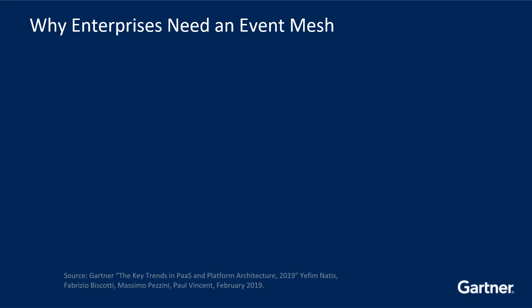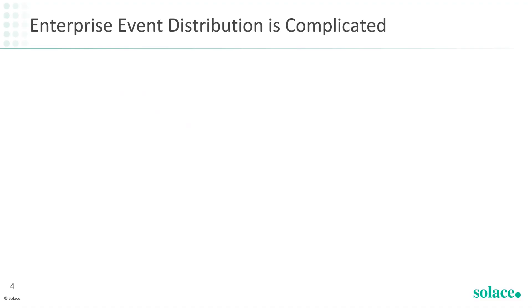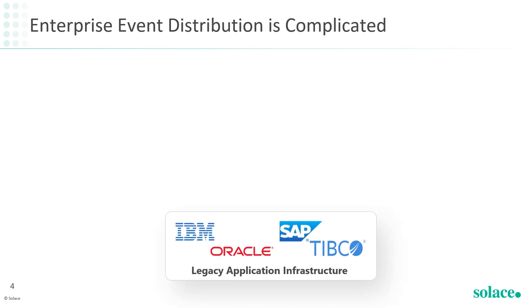Now let's talk about why the concept of an event mesh is important. According to Gartner, event-driven computing is central to the continuous agility of digital businesses. Event mesh provides optimization and governance for distributed event interactions. Here's what we're finding with many of our enterprise customers. As you think about becoming event-driven, they have legacy on-premises applications — static data silos that prevent lines of business, applications, and people from sharing information with one another. The goal as you become event-driven is to get all that data in motion and share it with the rest of your enterprise.